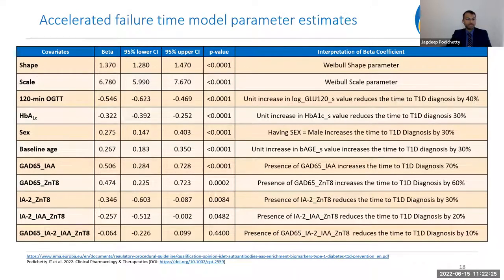The parameter estimates show beta coefficients for each covariate. For example, a one-unit increase in the log of 120-minute OGTT glucose (standardized) reduces time to T1D diagnosis by 40%. For sex, being male increases the probability of T1D diagnosis by approximately 30%. These coefficients were estimated using TrialNet and TEDDY as training data.